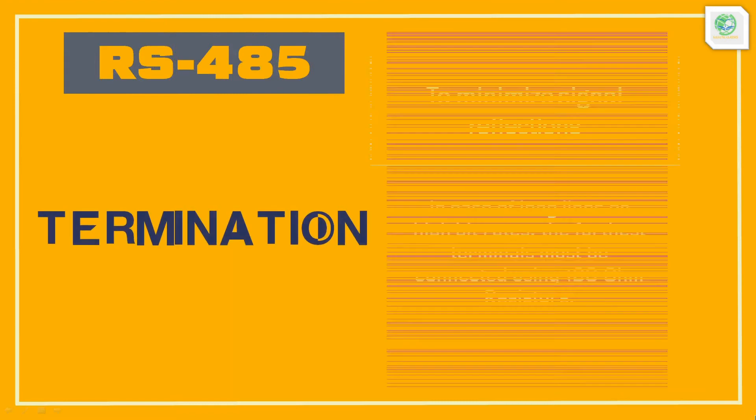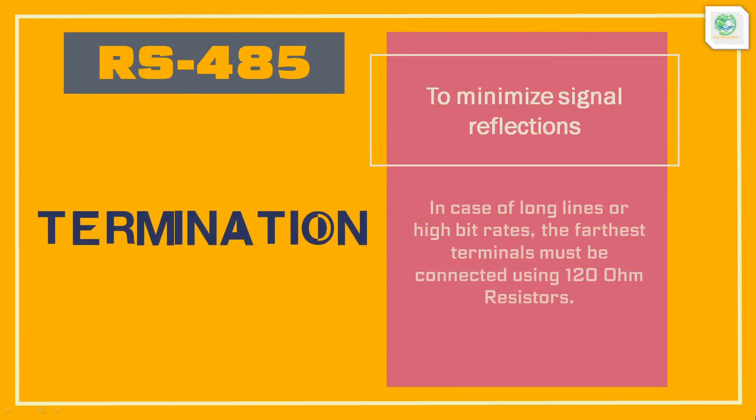In case of high bit rates or long lines, the two farthest terminals must be connected using 120 ohm resistors. This is done to minimize signal reflections as much as possible.